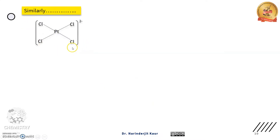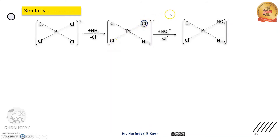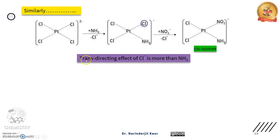Similarly, tetrachloroplatinate को ammonia के साथ react करते हैं — एक chloride ion ammonia के साथ substitute होगा। Second step में nitro ligand के साथ replacement होगी। Replacement that position पे होगी which is trans to the chloride ligand, क्योंकि ammonia का trans directing effect is less as compared to chloride. इस वजह से cis isomer बनेगा। Trans directing effect of chloride is more than ammonia.